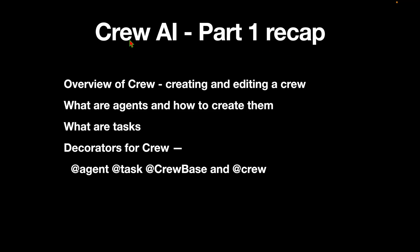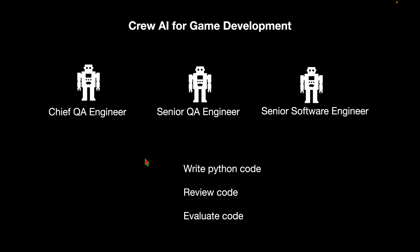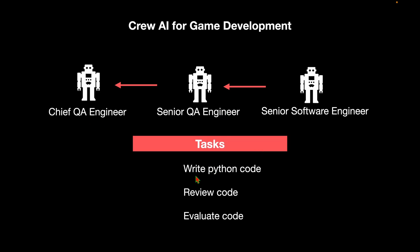Let's start with the recap of part one in this crew AI series, in which we gave an overview of crew, such as creating and editing a crew. We also saw what agents are, how to create those agents, and we also learned about tasks. For doing all of this we had to use certain decorators like agent, task, crew base, and crew. Eventually we ended up developing a crew with three agents: the senior software engineer, QA engineer, and chief QA engineer, and the tasks were to write Python code, review the code, and evaluate the code.